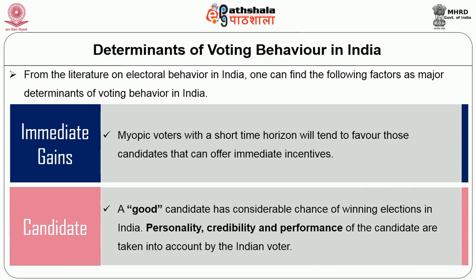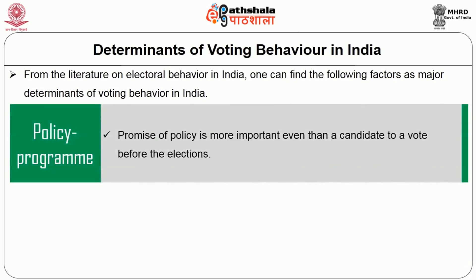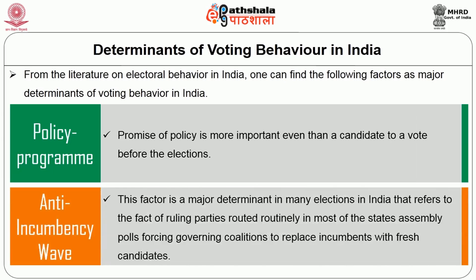Fourth, candidate — a good candidate has a considerable chance of winning elections in India; personality, credibility and performance of the candidate are taken into account by the Indian voter. Fifth, policy programme — the promise of policy is more important even than a candidate to a voter before elections. Sixth, anti-incumbency — anti-incumbency factor is a major determinant in many elections in India, referring to the fact of ruling parties being routed in most state assembly polls, forcing governing coalitions to replace incumbents with fresh candidates.